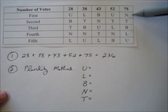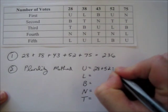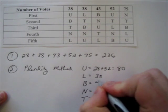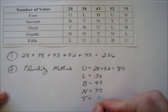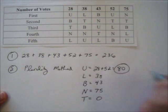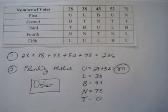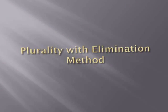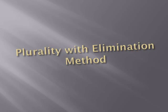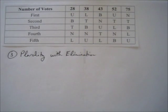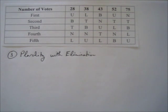For first-place votes only, we look at the first row. Usher had 28 plus 52, which is 80 first-place votes. Lifehouse had 38, Blue Cantrell had 43, Nelly had 75, and Train had zero. Since 80 is the largest number, Usher would win the election using the plurality method.